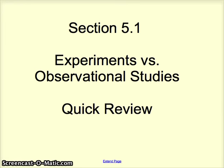Chapter 5 is on experimental design and sampling methods, and it's going to seem very non-mathy after what we've been going through with normal curves, z-scores, percents, percentiles, and linear regression. But it's extremely important to what we'll do in the second term, so the vocabulary and methods matter greatly to the statistical analysis we'll do then. This video is quite short, just doing some quick vocabulary review on experiments and observational studies.